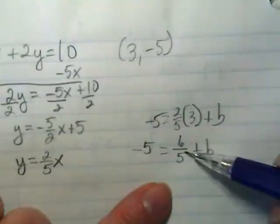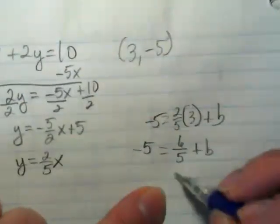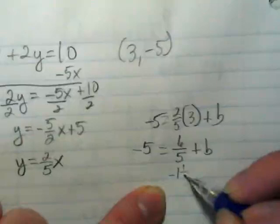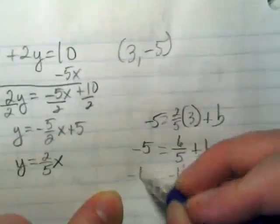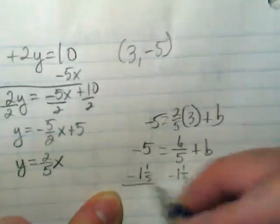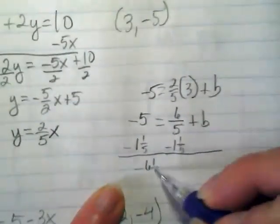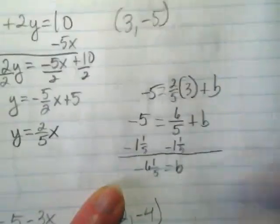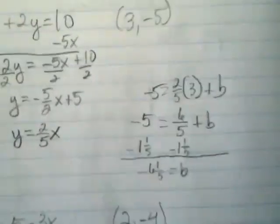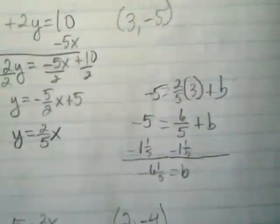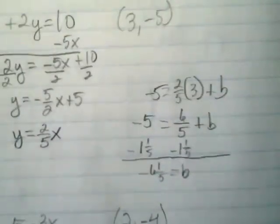I can really think about this as being 1 and 1 fifth, so I'm going to subtract 1 and 1 fifth from this. And I end up with negative 6 and 1 fifth equals b. And you could convert that to a decimal if you prefer, or leave it as a fraction.